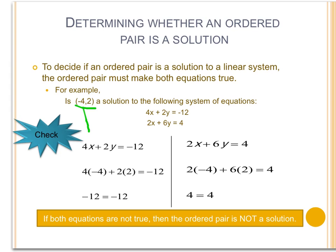For the first equation, we plug in negative 4 for x and 2 for y. That equals 4 times negative 4 plus 2 times 2 equals negative 12. And in fact, negative 12 does equal negative 12.